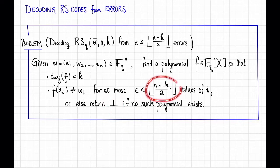Why do we have (n minus k)/2 here? Remember that because Reed-Solomon codes meet the singleton bound, floor of (n minus k)/2 is the floor of (distance minus 1)/2. And that's basically the best we could hope for. So what we're actually asking is: can we decode Reed-Solomon codes efficiently from errors up to as many errors as we could possibly hope to correct?